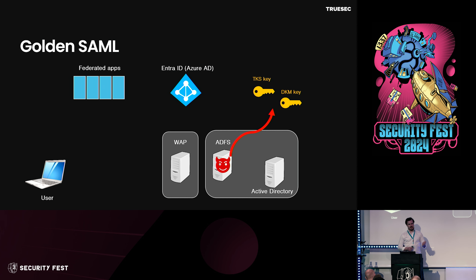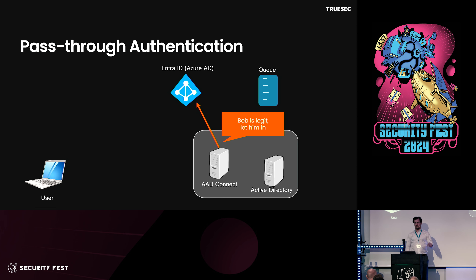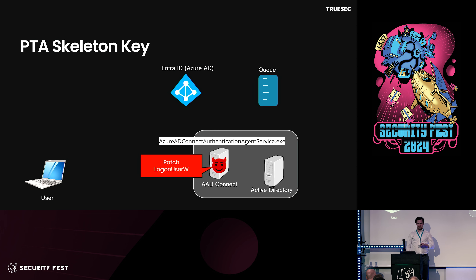But that doesn't really fit what we saw — golden SAML would just give you a valid token, no password reset needed. Moving on to password authentication: you go to AD, it puts the logon in the queue, and AD Connect polls new logon attempts. If it's legitimate, it sends basically a boolean to Entra ID. The problem is, if you own the AD Connect server, you can patch that LoginW function. There are known tools that do this, like PTA Spy from AD Internals. If you own that server, you can send whatever you want — for example, write a function that says if the password is 'banana,' return true and let the user in.